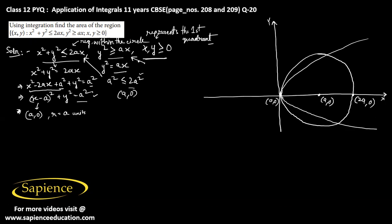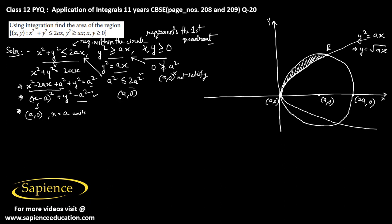Now testing (a, 0) in y squared greater than or equal to ax: 0 is not greater than or equal to a squared, so (a, 0) does not satisfy this inequality. The region we need is only the part in the first quadrant satisfying both conditions — the shaded region. We take y equals root ax as the equation for the branch of the parabola above the x-axis.